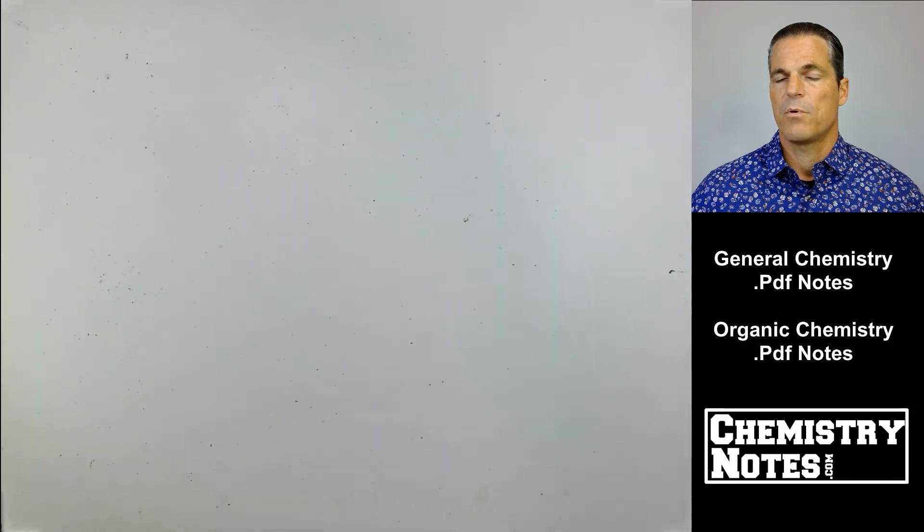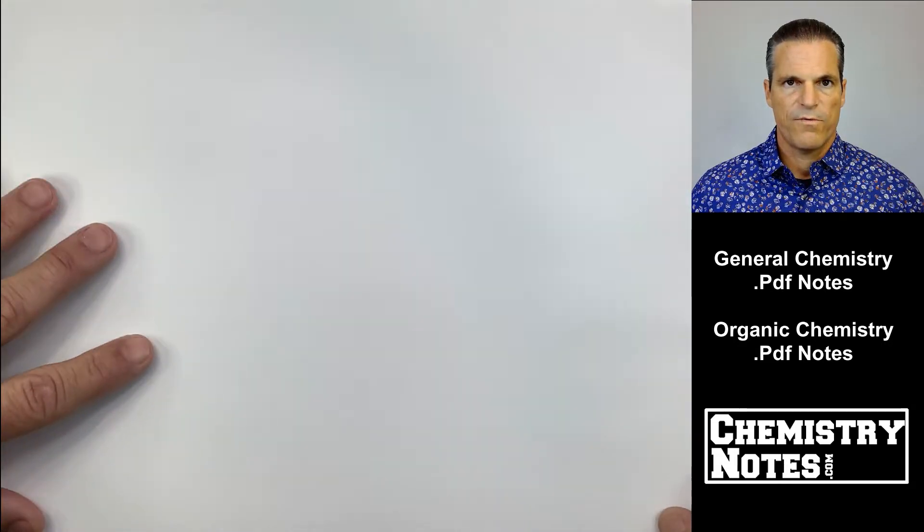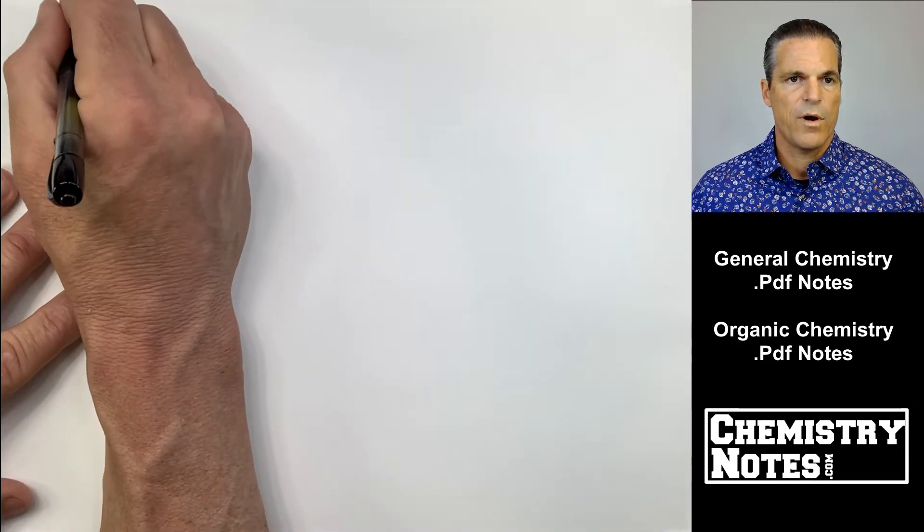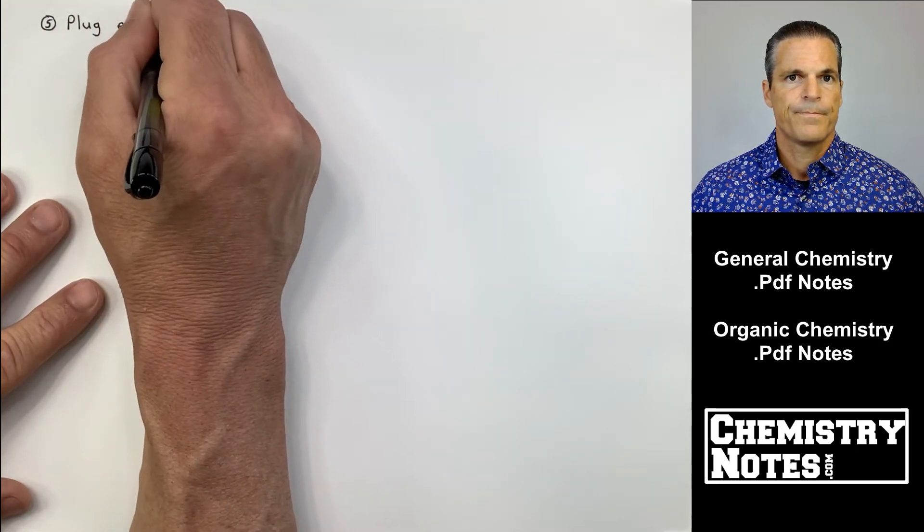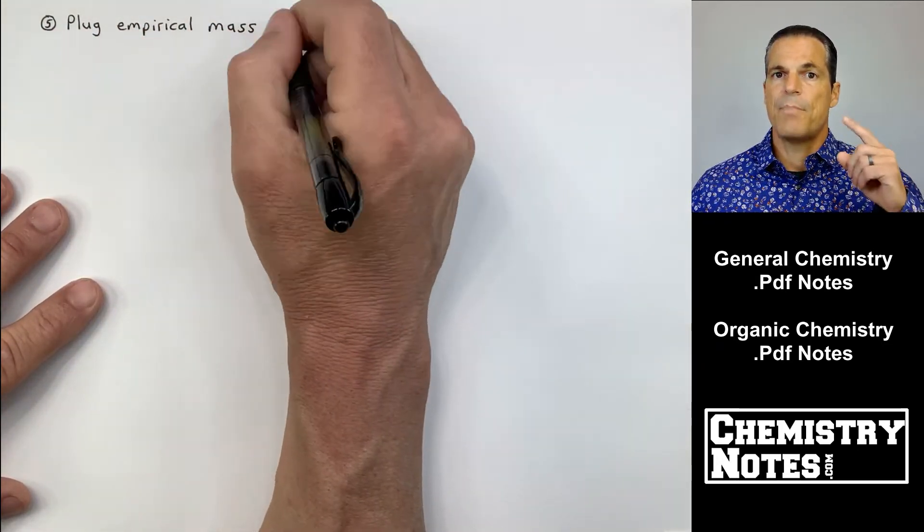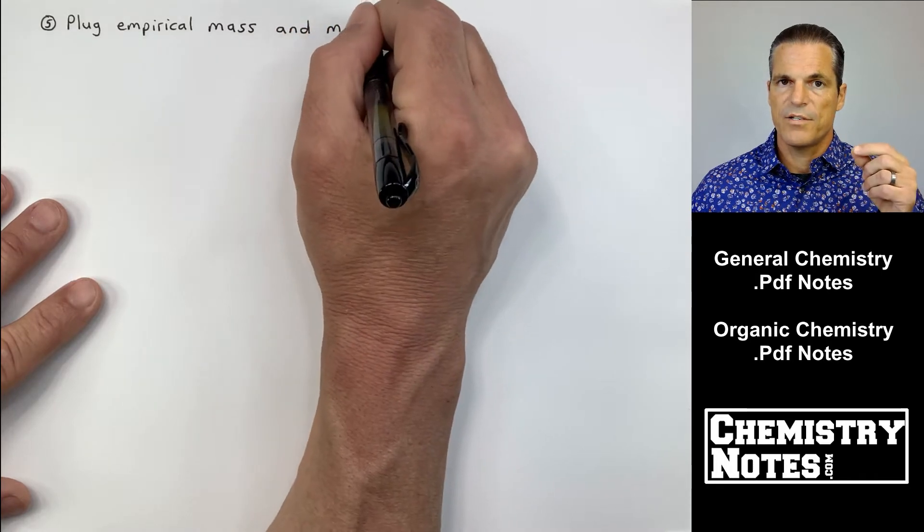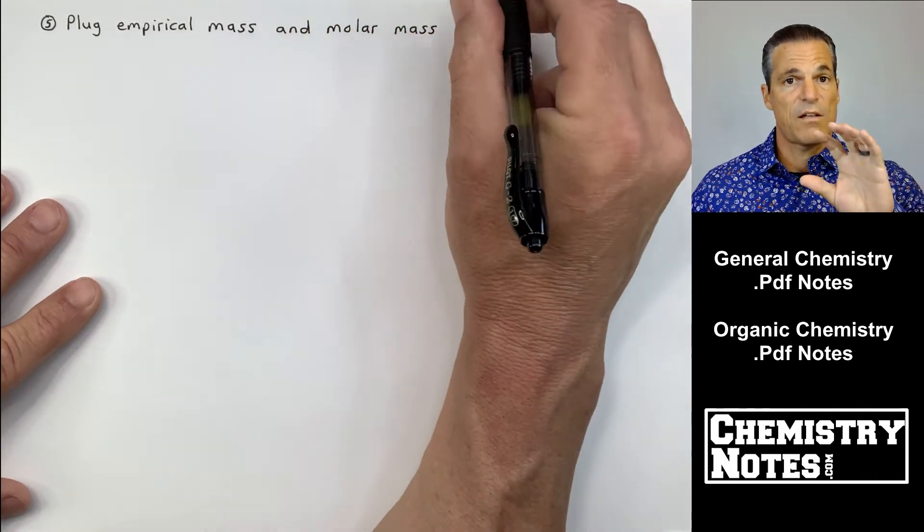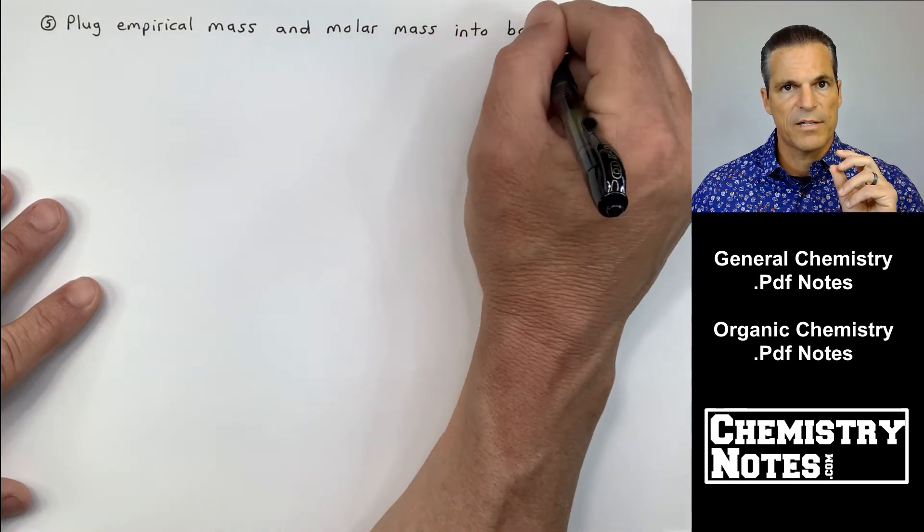Now I can use the boxed equation from a few pages back. I know that said formulas, but I can put the respective masses into each as well. So first of all, rule number five: plug empirical mass and molar mass into the boxed formula from earlier. Earlier on the left it was molecular formula, but I'm going to go ahead and put molar mass in there, because these are all relative and they're all kind of proportional.